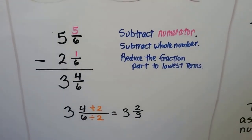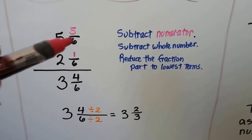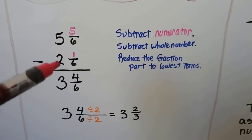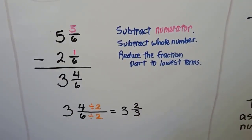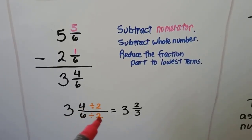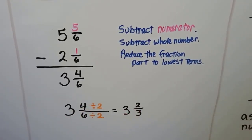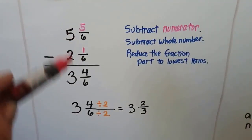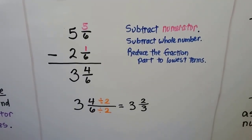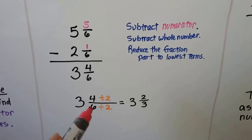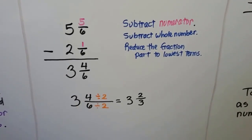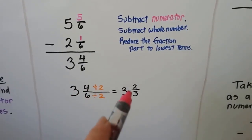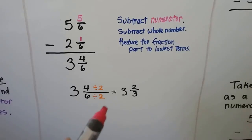Take a look at this subtraction problem. They have the same denominator, so we just subtract the numerator: 5 take away 1 is 4. We subtract the whole numbers: 5 take away 2 is 3, but this needs to be reduced. The 4 can be divided by 2 and so can the 6, and we'll get 3 and 2 thirds. If you mark down 3 and 4 sixths as the answer, it will be wrong. They might even trick you on the GED test and offer 3 and 4 sixths when really it should be reduced to 3 and 2 thirds, so be very careful.